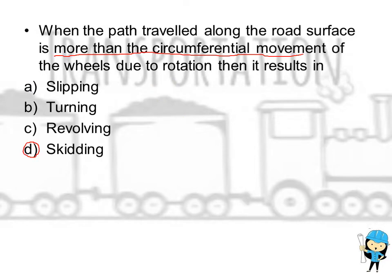When the path travelled along the road surface is more than the circumferential movement of the wheels due to rotation, then it results in skidding.